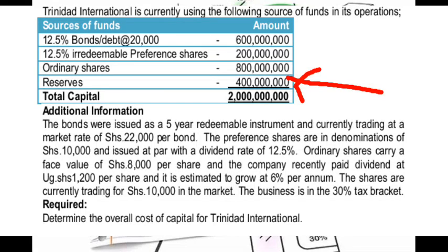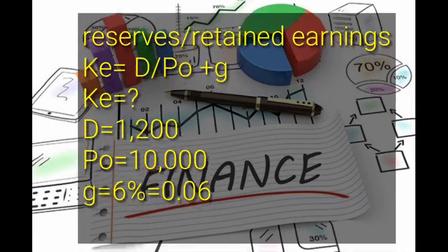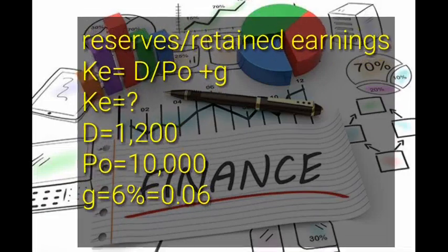The last source of funds is reserves, with an amount of 400 million and no additional information provided. Some say we don't calculate the cost of reserves because it is a free source of finance with no required rate of return. We only calculate cost of debt and cost of equity. However, if we are required to calculate it, we use the retained earnings formula: D over P₀ plus g.